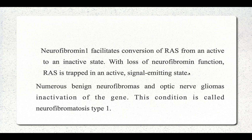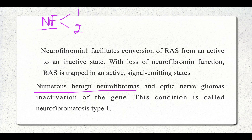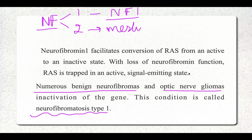Another gene to discuss is the neurofibromin gene. There are two types: NF1 is associated with numerous benign neurofibromas and optic nerve gliomas — inactivation of this gene causes neurofibromatosis type 1. NF2 is also known as the merlin gene and is associated with neurofibromatosis type 2.